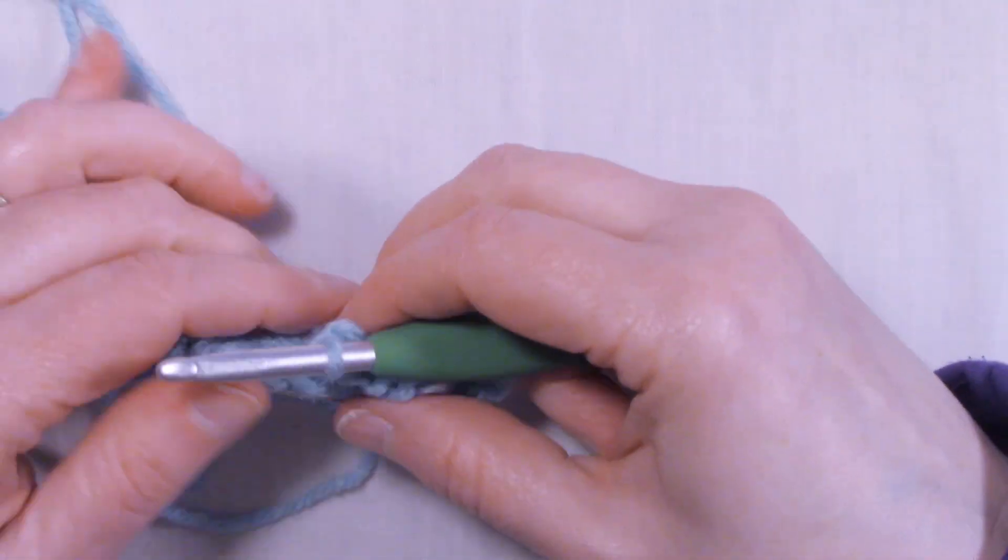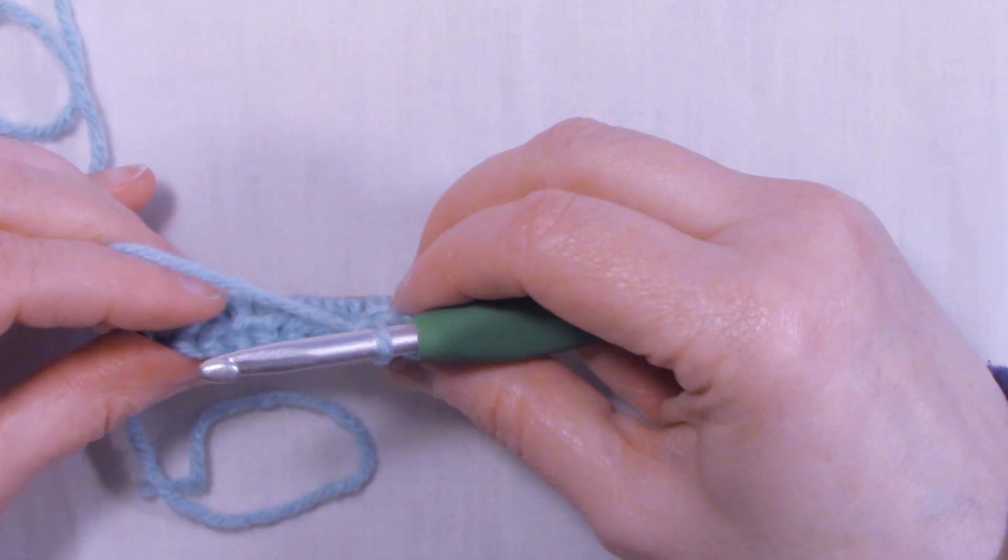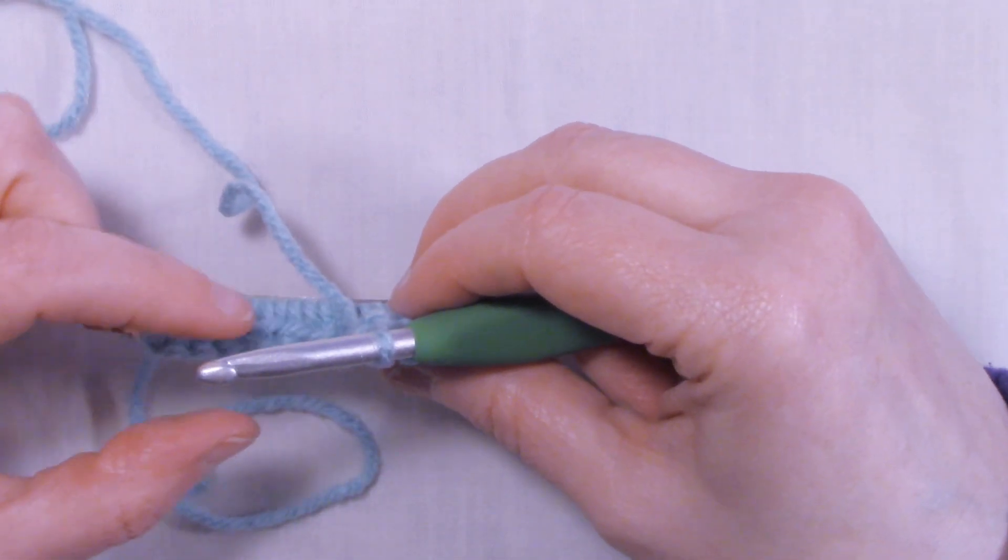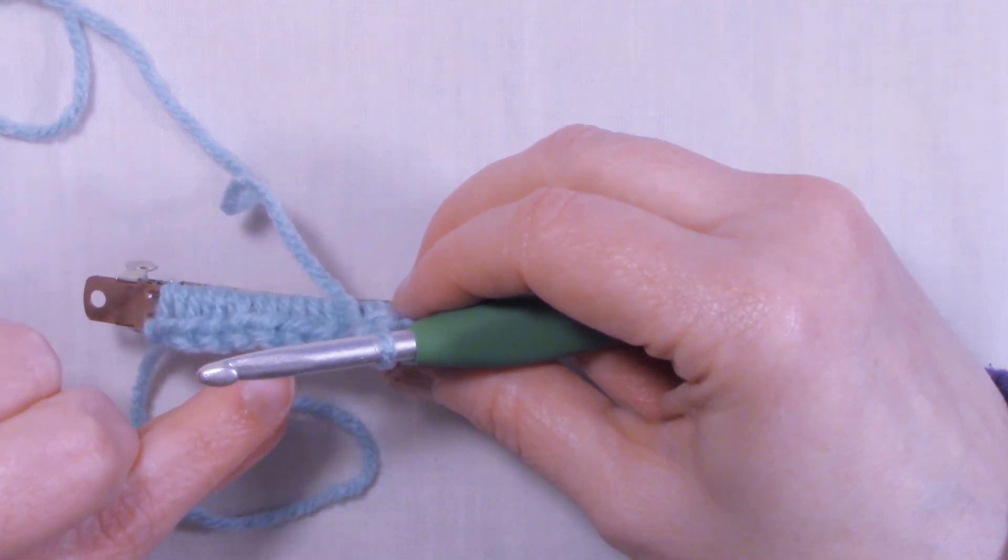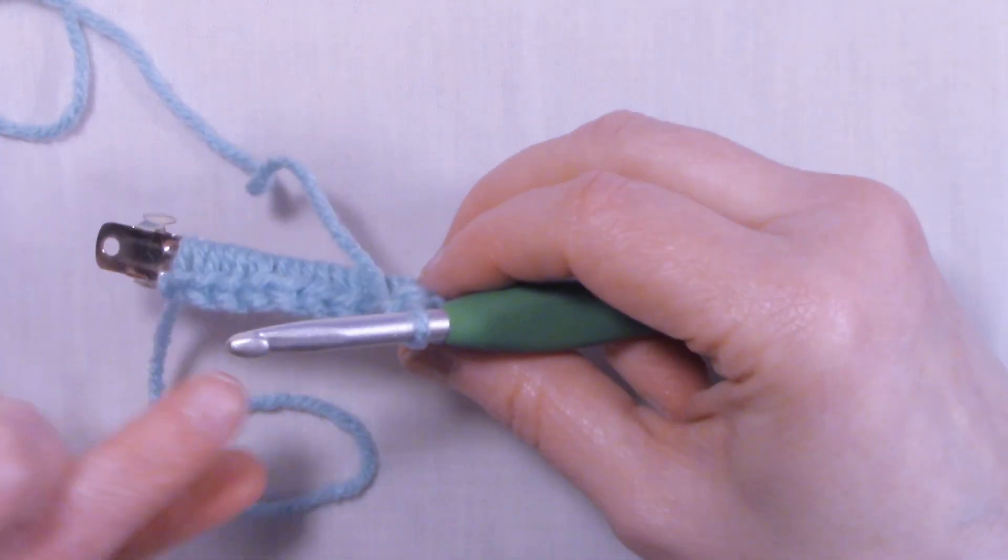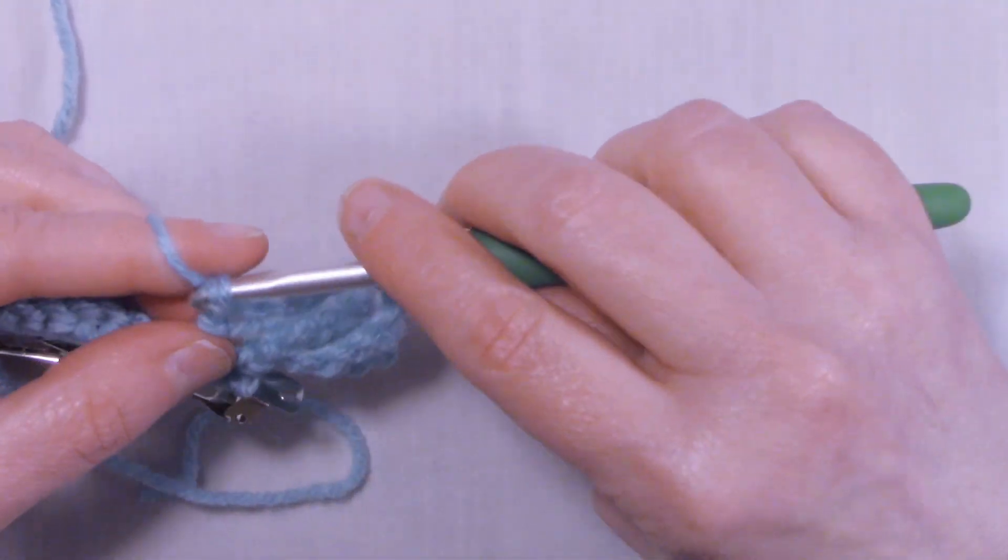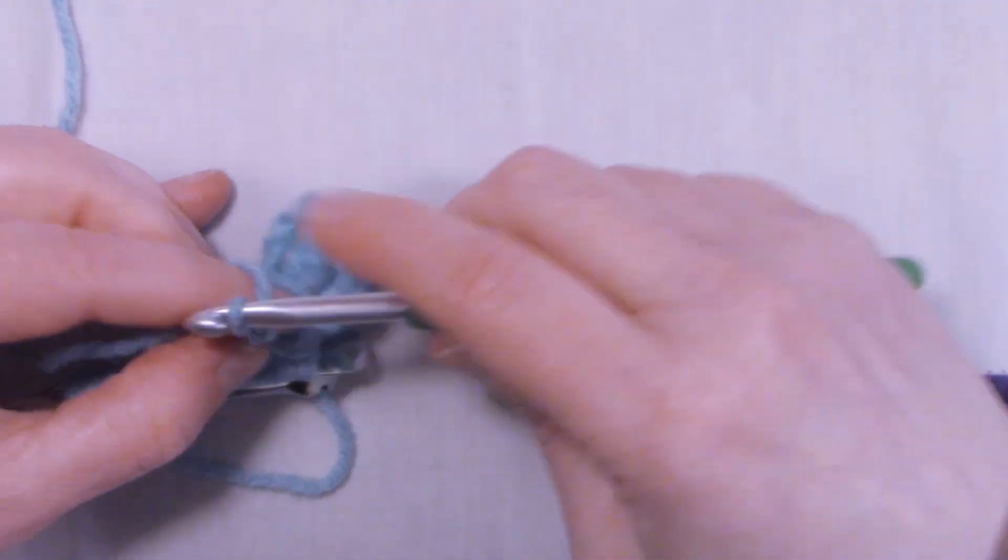And we're going to slip stitch into the back loop of the next stitch. So that's how we're going to do this. We're going to chain 10, go front loop, chain 10, back loop, chain 10, front loop, chain 10, back loop, all the way to the end of the row. So continue that and I'll meet back up with you at the end of the row.